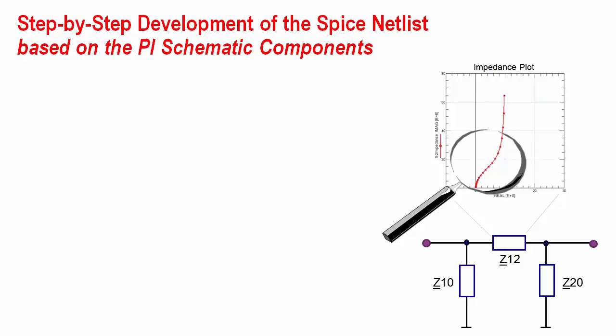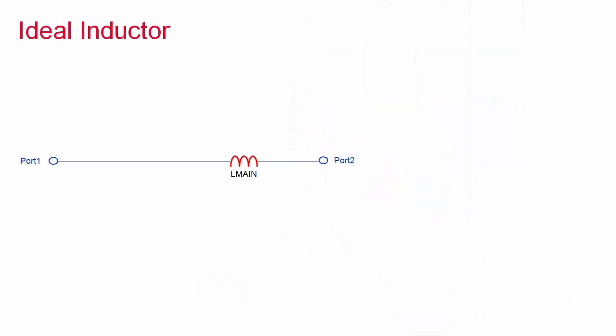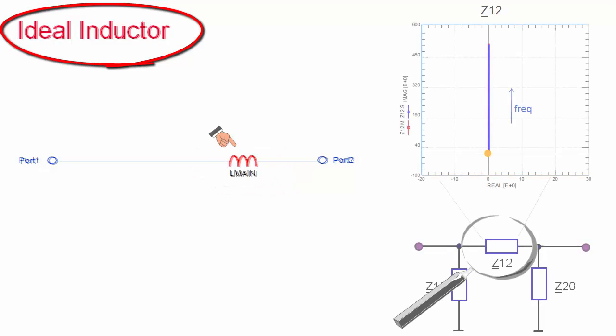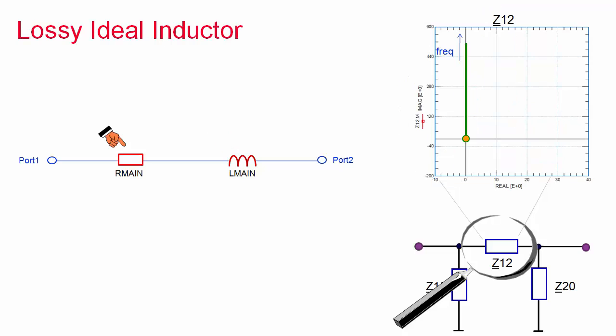But let's go step by step and begin with some studies about the dominant impedance Z12. The first, and of course most important, component is the inductor L-main. In the impedance plot Z12, the trajectory of L-main represents a straight line along the imaginary y-axis. Its length is determined by the inductor value.